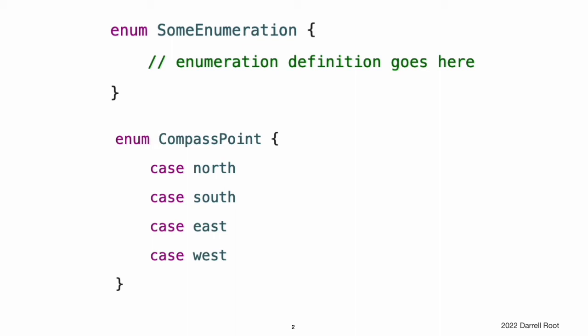You use the case keyword to introduce new enumeration cases. Note: Swift enumeration cases do not have an integer value set by default, unlike languages like C and Objective-C. In the compass point example above, north, south, east, and west do not implicitly equal 0, 1, 2, and 3. Instead, the different enumeration cases are values in their own right, with an explicitly defined type of CompassPoint.